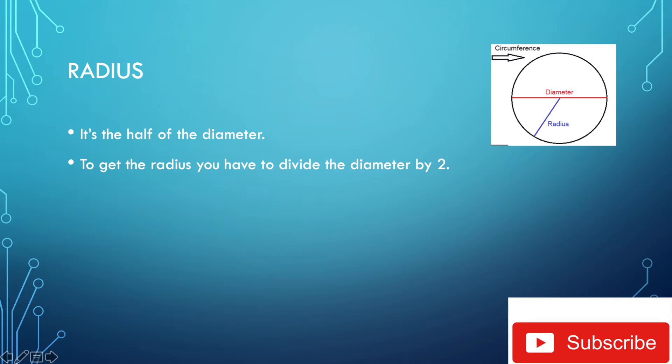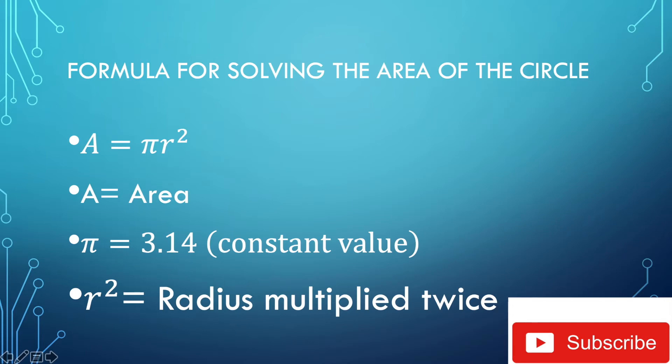This is the part that you've been waiting for — the area of the circle. A is equal to πr². A is equal to area; pi is 3.14 and it never changes, a constant value. R squared means radius multiplied twice. For example, if the radius is 15, it's going to be 15 times 15. That's how you solve r squared.